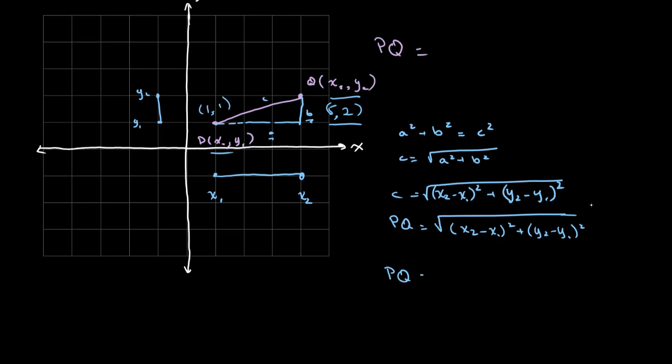So PQ is equal to, we have two points, 5, 2, and 1, 1. So we get x2 minus x1, we can call this x2, or this x2 and this x1. So we get 5 minus 1 whole squared plus y2 minus y1, so 2 minus 1 whole squared.